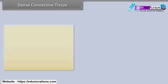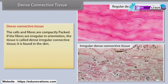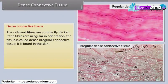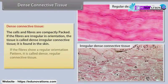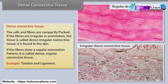Dense connective tissue has cells and fibers compactly packed. If the fibers are irregular in orientation, the tissue is called dense irregular connective tissue, found in the skin. If the fibers show a regular orientation pattern, it is called dense regular connective tissue, for example tendon and ligament.